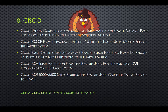Cisco Email Security Appliance MIME header error handling flaw lets remote users bypass security restrictions on the target system. Cisco ASA input validation flaw lets remote users execute arbitrary XML commands on the target system. Cisco ASR 5000 and 5500 series routers vulnerability lets remote users cause the target service to crash.